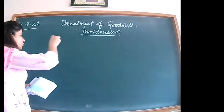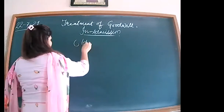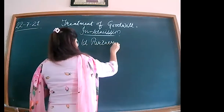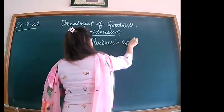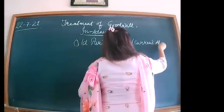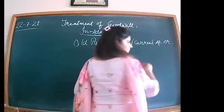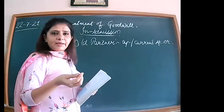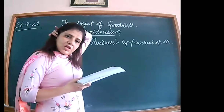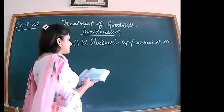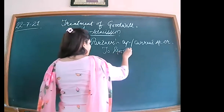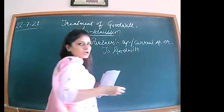When goodwill already exists in the books, we have to debit the old partners' capital account or current account. The existing goodwill — which was purchase goodwill shown in your books of account — will be divided between the old partners in their old ratio. This means the goodwill is to be written off.